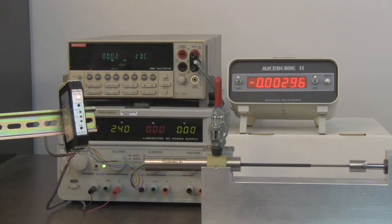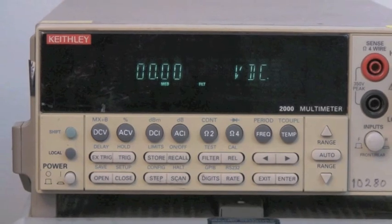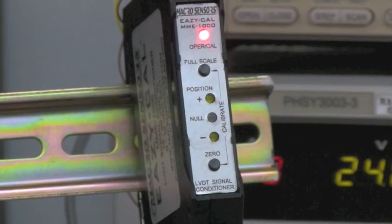Finally, we displace the LVDT back to the zero inch position and we observe the output to be 0.00 volts DC. Calibration has now been successfully completed and the EasyCal is ready for normal operation.